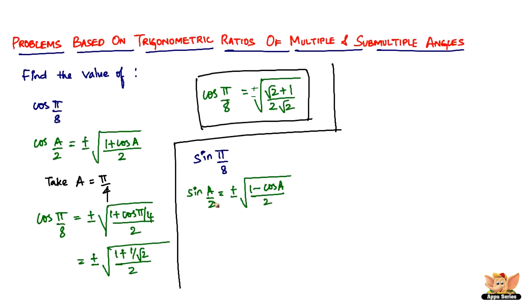So now what do we have to substitute A as? Take A as π/4, because only when you take it as π/4 are we going to get sin π/8 when we substitute there.